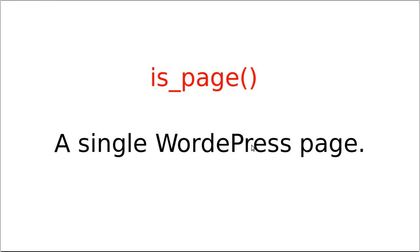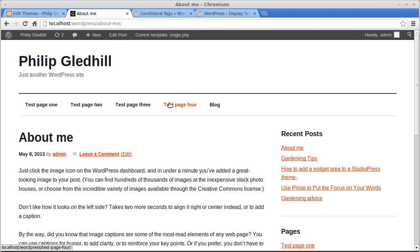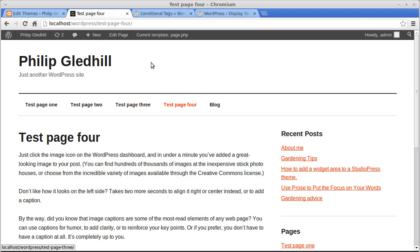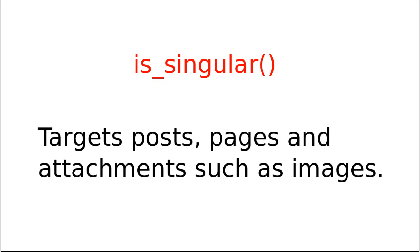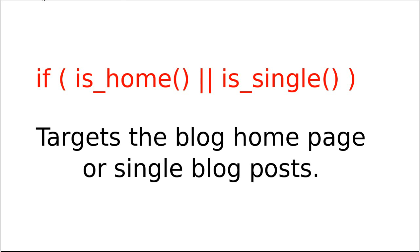is_page() targets a WordPress page — you can verify this with the plugin, which shows 'page.php'. That targets a single WordPress page as opposed to a single WordPress blog post. singular() gets posts, pages, and attachments such as images. You can also combine conditions — for example, is_home() || is_single() targets either the blog home page or a single blog post. Two pipe characters mean 'or' in PHP.